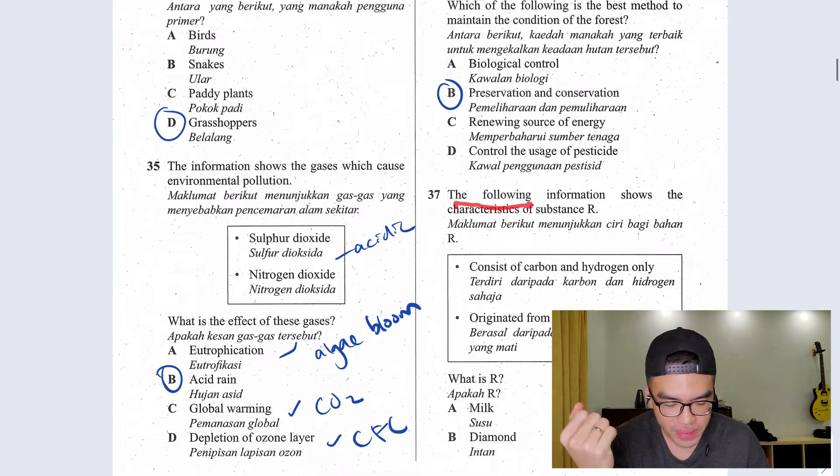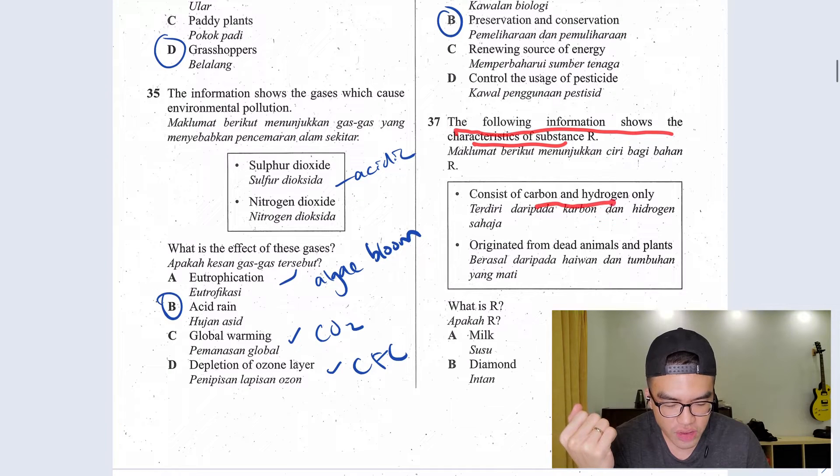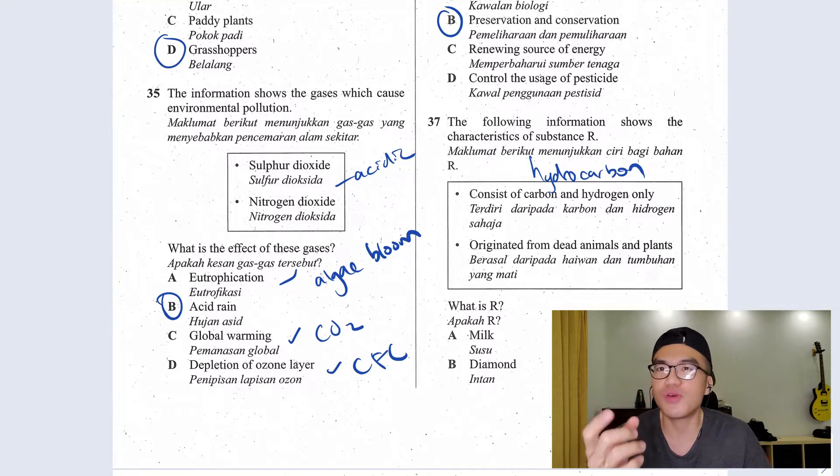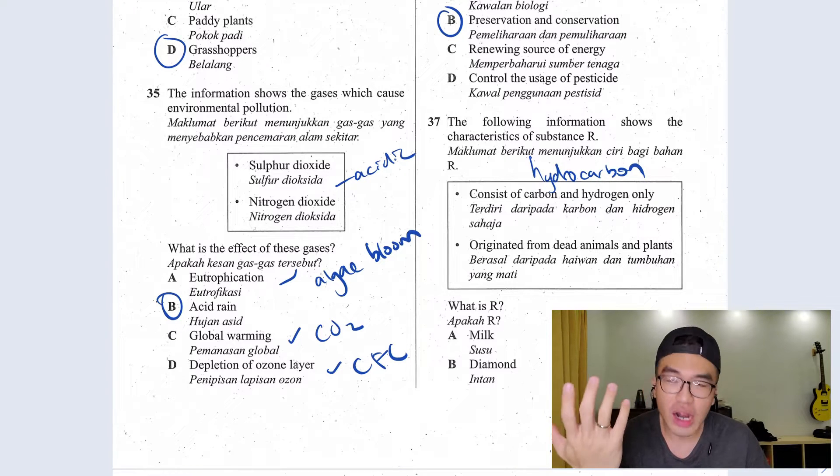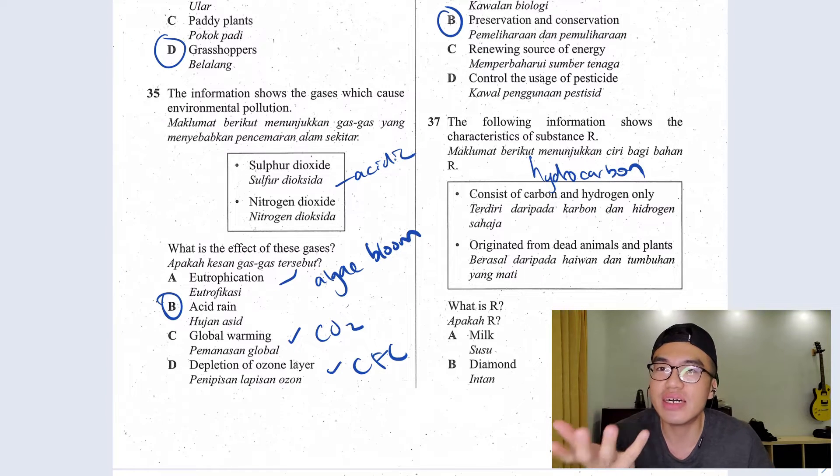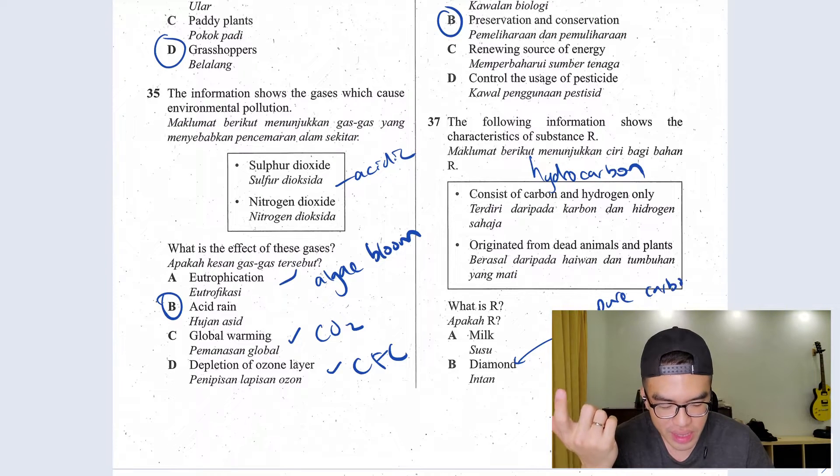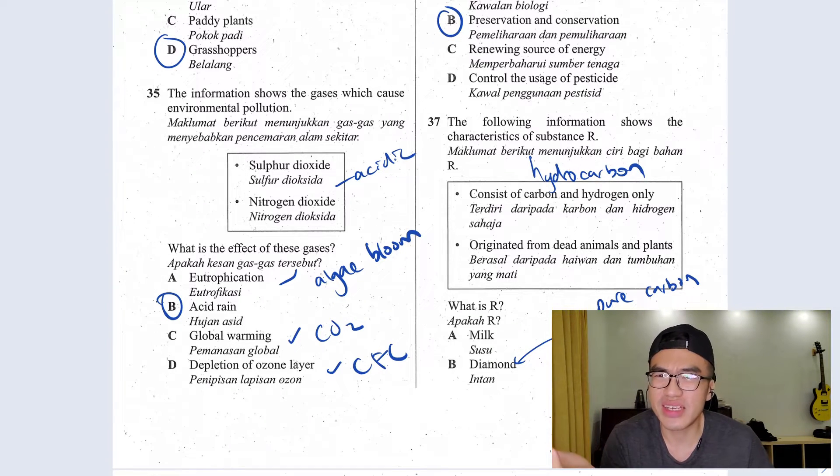Question 37, the following information shows the characteristic of substance R consists of carbon and hydrogen only, originated from dead animals and plants. This is what we call hydrocarbon. Why is it hydrocarbon? Because it has hydrogen and carbon, as the name says. So what is R? R is obviously your petrol. Petrol is a hydrocarbon. Graphite and diamond, they are pure carbon. Milk is just an organic substance.